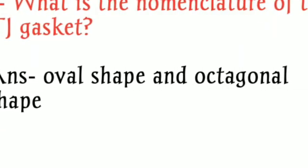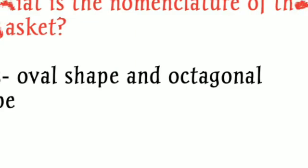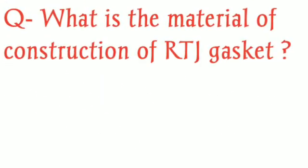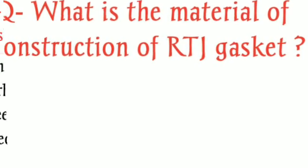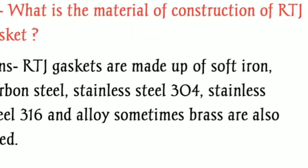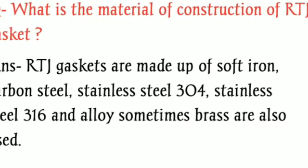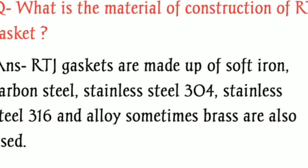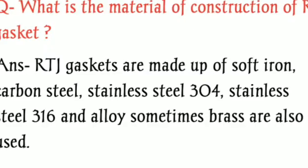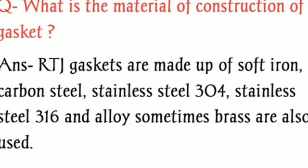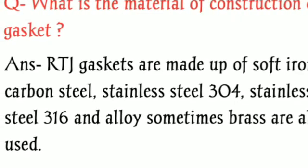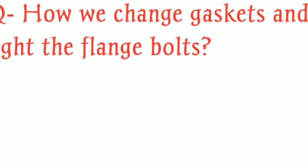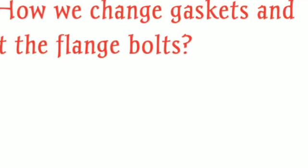The next question is: what is the material of construction of RTJ gaskets? RTJ gaskets are made of soft iron, carbon steel, stainless steel 304, stainless steel 316, and alloy steel. Sometimes brass is also used for RTJ gaskets.